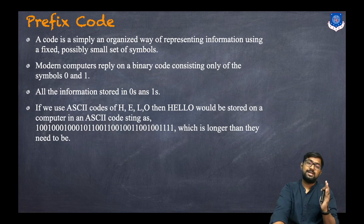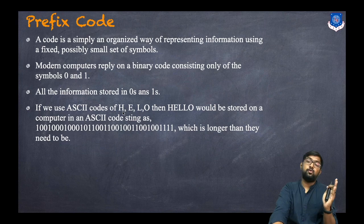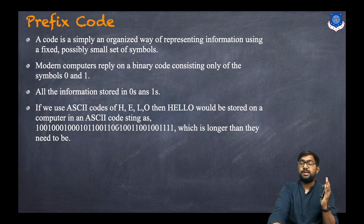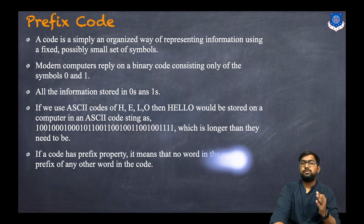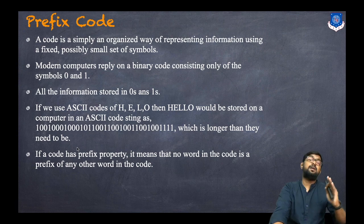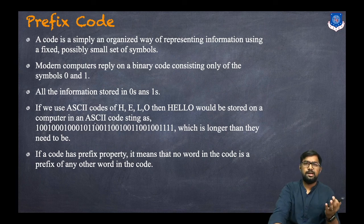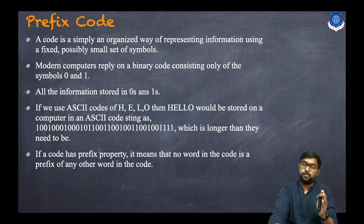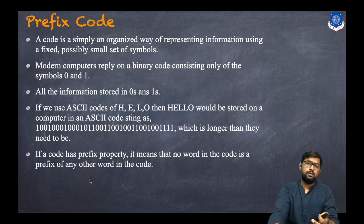Consider an example: if we use ASCII codes — for instance, the ASCII codes of H, E, L, and O — then 'hello' would be stored in a computer as a very long string of ones and zeros, which is longer than it needs to be. So we use prefix codes. A code has the prefix property if no word in the code is a prefix of any other word in the code.